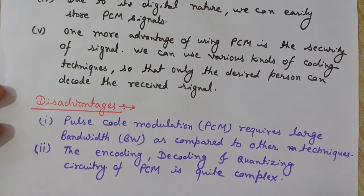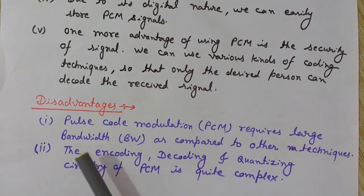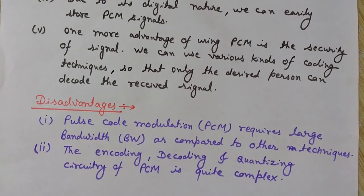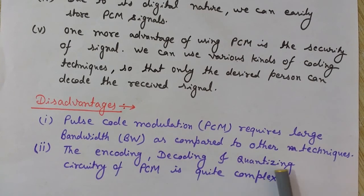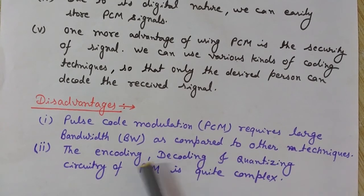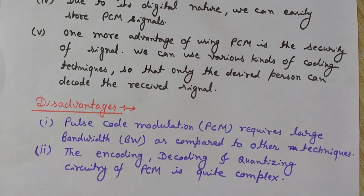Now let's discuss some disadvantages of PCM. Although the disadvantages are fewer than the advantages, the first disadvantage is that PCM requires a large bandwidth compared to other techniques, due to its digital nature. The second disadvantage is that the encoding, decoding, and quantizing circuitry of PCM is quite complex in comparison to other modulation techniques. So these are the main disadvantages of PCM.